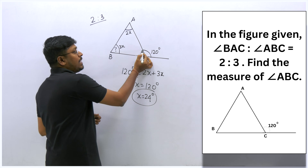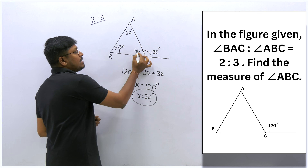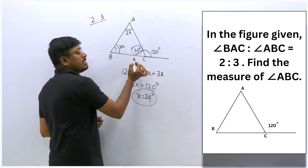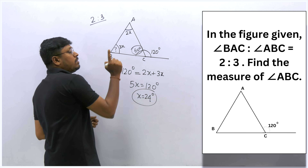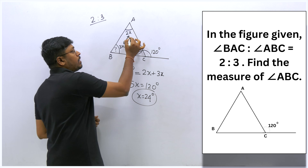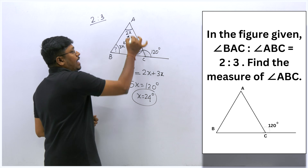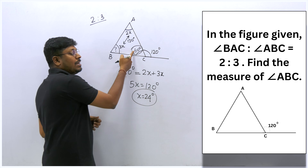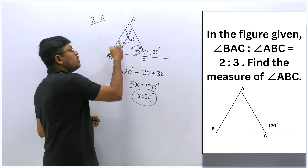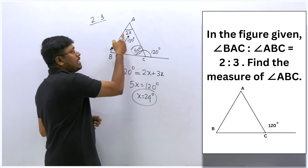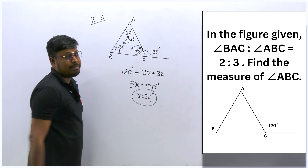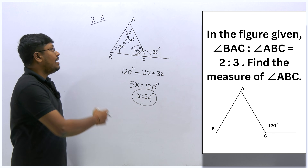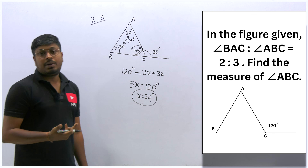With x = 24: angle BAC = 2 × 24 = 48 degrees, angle ABC = 3 × 24 = 72 degrees, and the interior angle at C = 180 − 120 = 60 degrees. Verify: 48 + 72 + 60 = 180 degrees. There are different ways to solve triangle questions once you understand the underlying logic.